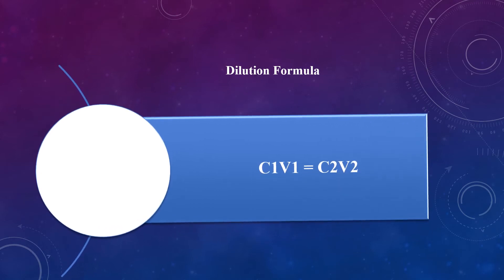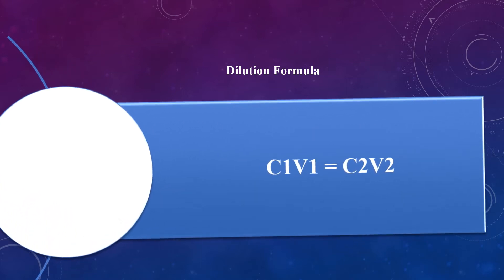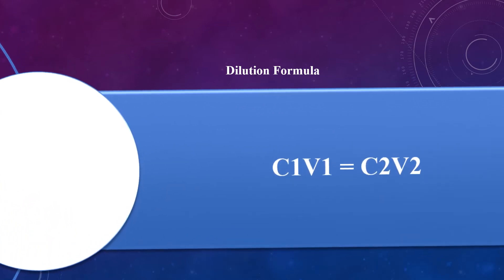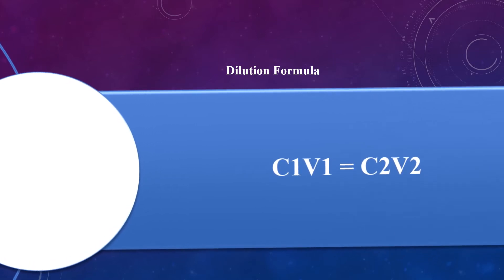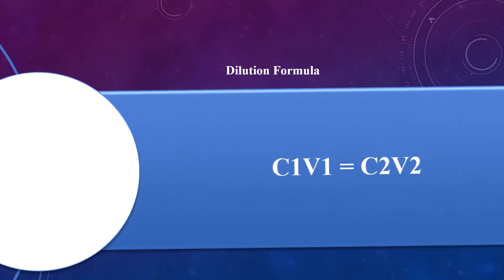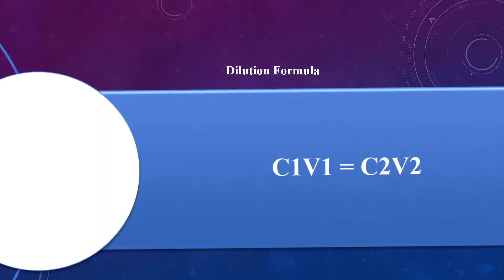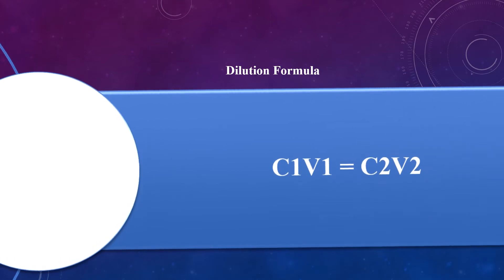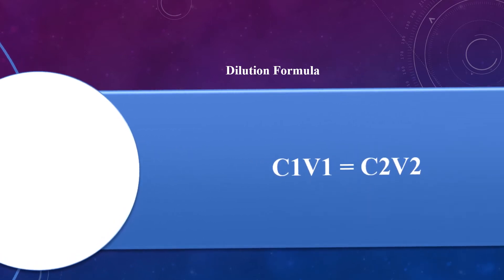We can say that C1V1 equals C2V2. Here, C1 is the concentration of the stock solution. V1 is the volume required, which will be taken from the stock solution. C2 is the required concentration which we want to prepare. And V2 is the required final volume of the solution.